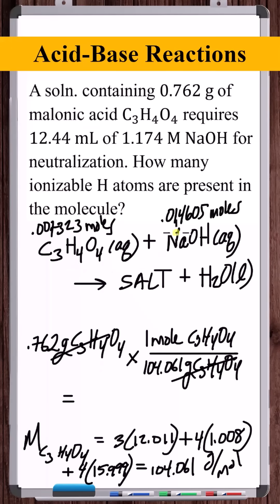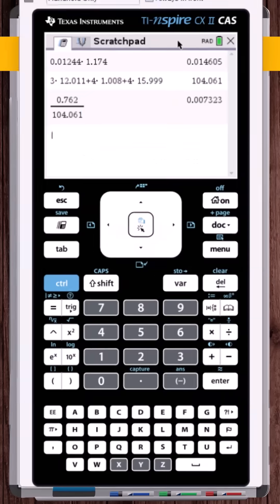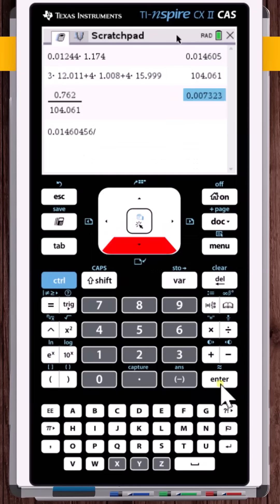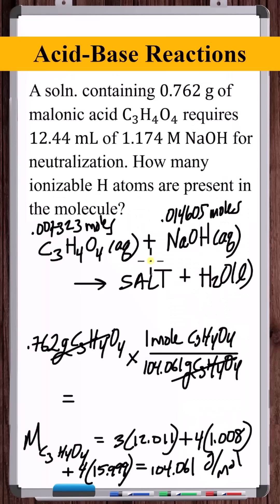If we divide 0.014605 by 0.007323, this is pretty much two, which means that two sodium hydroxide units were added for every one malonic acid unit. That means there were two protons coming off of the malonic acid for this to neutralize. So the answer is two.